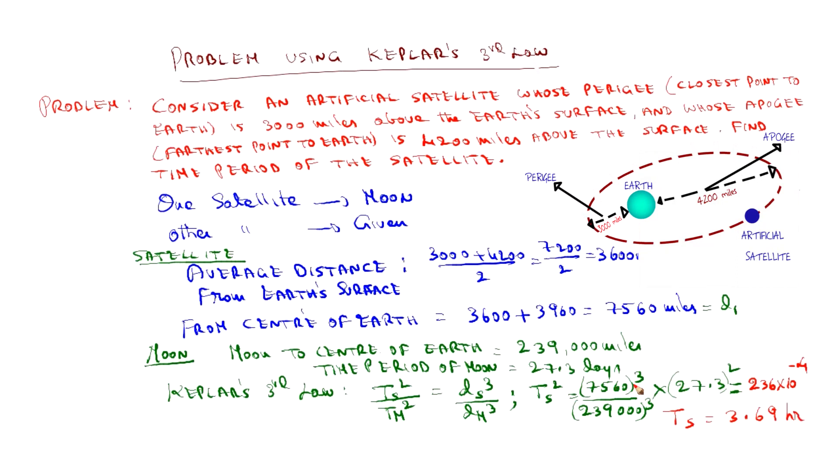This is in days. Because 27.3 is in days. So, when you convert that into hours, we will get the satellite's time period is 3.69 hours.